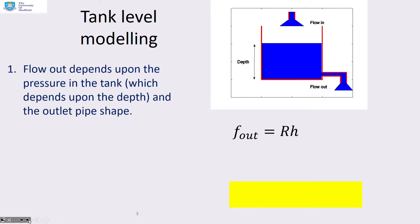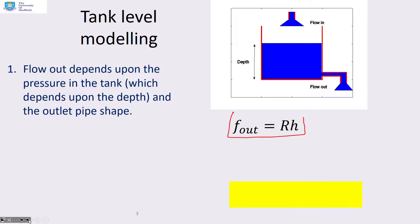Let's do some first principles modeling. The flow out depends upon the pressure in the tank, which basically depends on the depth, and also on the outlet pipe shape. We use the equation: flow out equals some constant R, which depends on the outlet pipe, times the depth h.